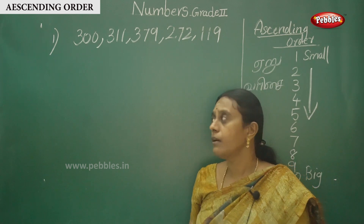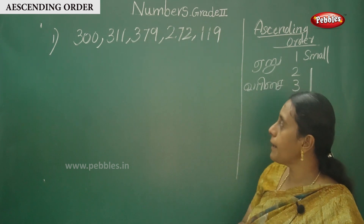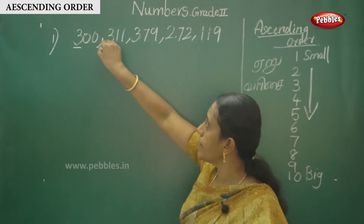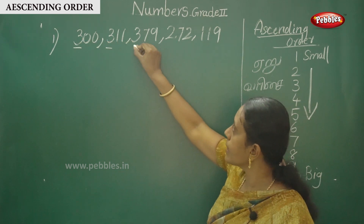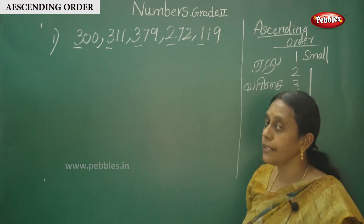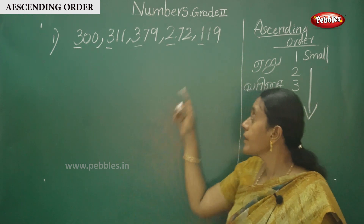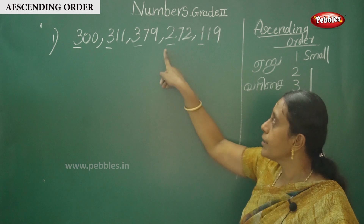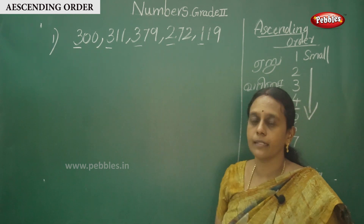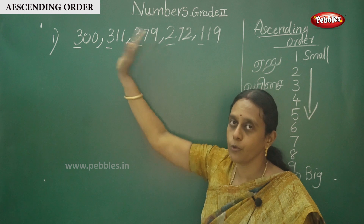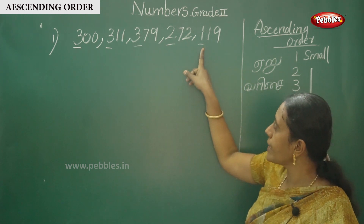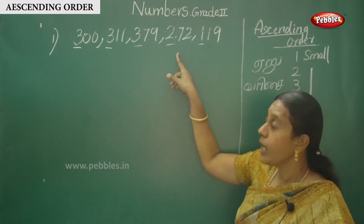Okay children, first observe the small numbers. Look at the hundreds place. Here is 100, here is 200, here is 300 and 300 — this is a group. So, let's name them: first, 119, then 272. What do we write in ascending order? We write the small number first. The hundreds place has 100, so we write 119.